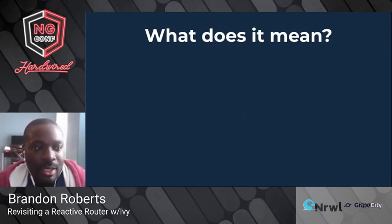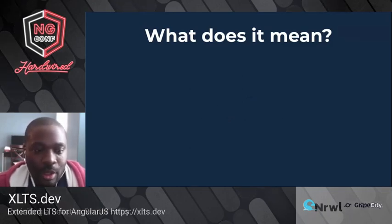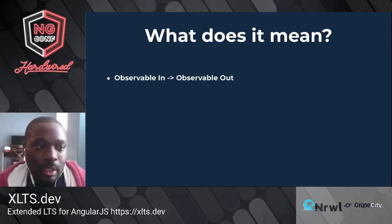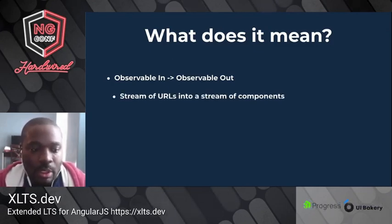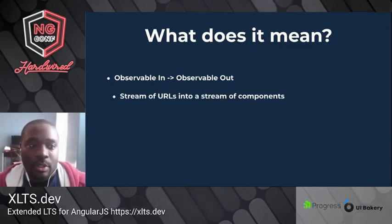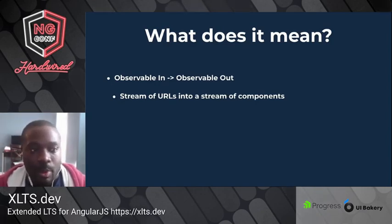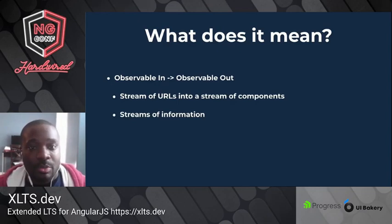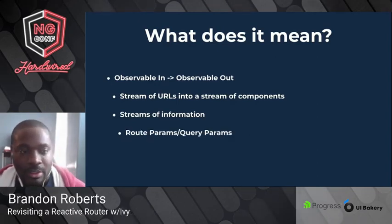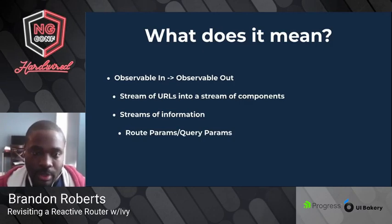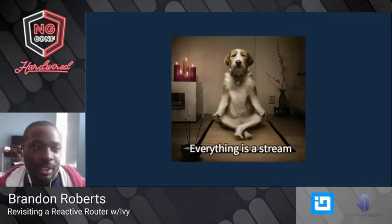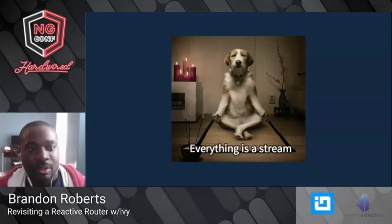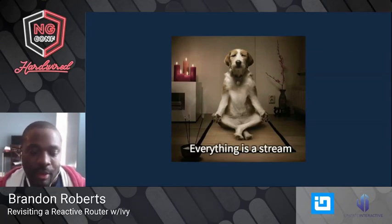So building a reactive router — what does that actually mean? I heard this term from Rob, and I agree with it: 'observable in, observable out.' We want streams of URLs — as far as routing is concerned — to be transformed or mapped into a stream of components. We also need streams of information from the router for things like route params, query params, and the active route. Everything is a stream.